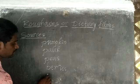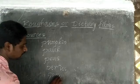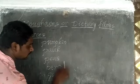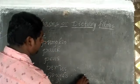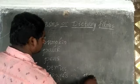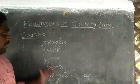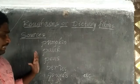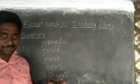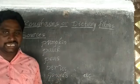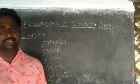Gourds include ridgegourd, bitter gourd, snake gourd, and bottle gourd, and so on. Other sources include apples and so on.